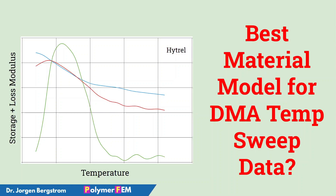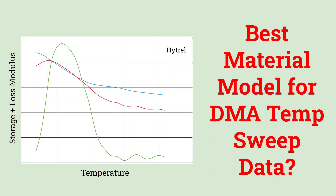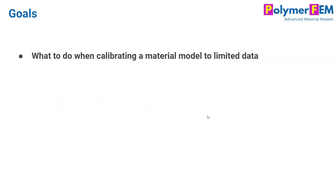Hi and welcome. Today I'm going to talk about how you can calibrate the material model when you only have a temperature sweep DMA test, which is a test I often use to measure the modulus as a function of temperature. This is part of my series on what to do when calibrating a material model with very limited experimental data available.